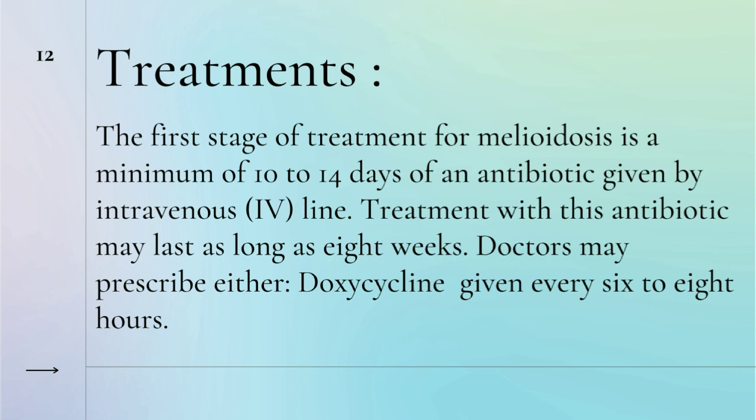Treatment is given to the patient in different stages. In the first stage, antibiotics are given by intravenous line for about 10 to 14 days. The second stage of treatment may last for 8 weeks, where doxycycline is given every 6 to 8 hours.